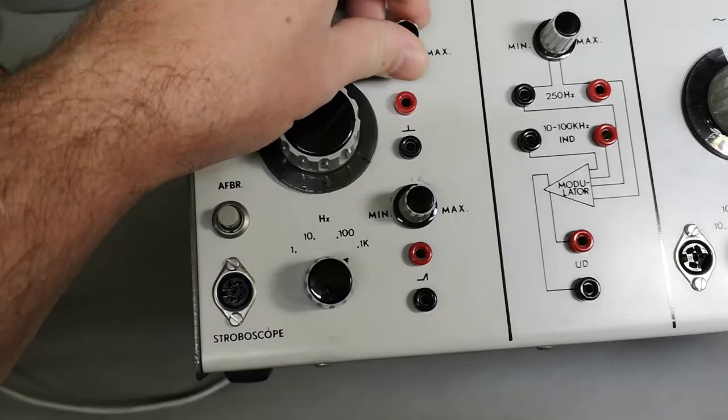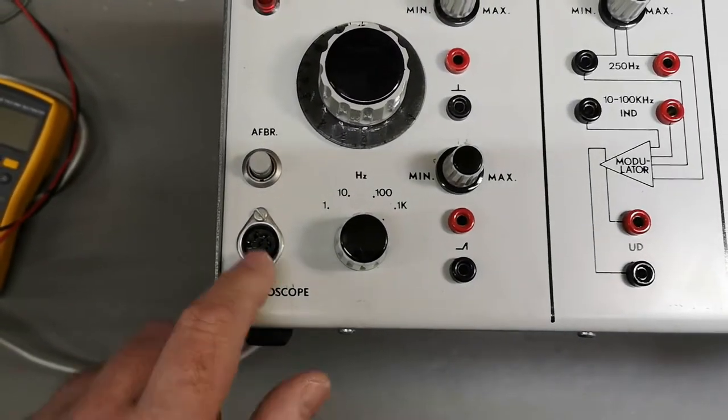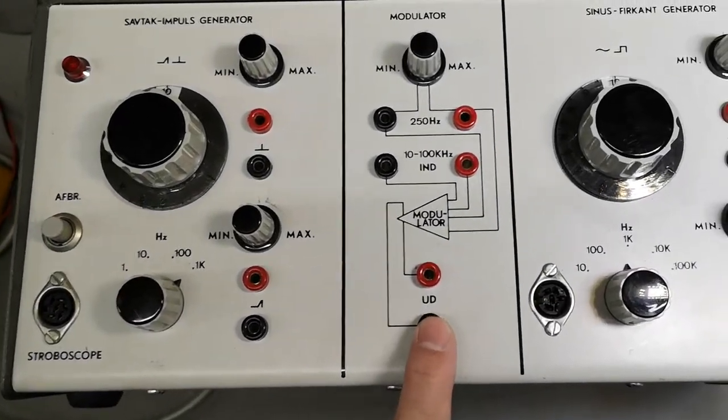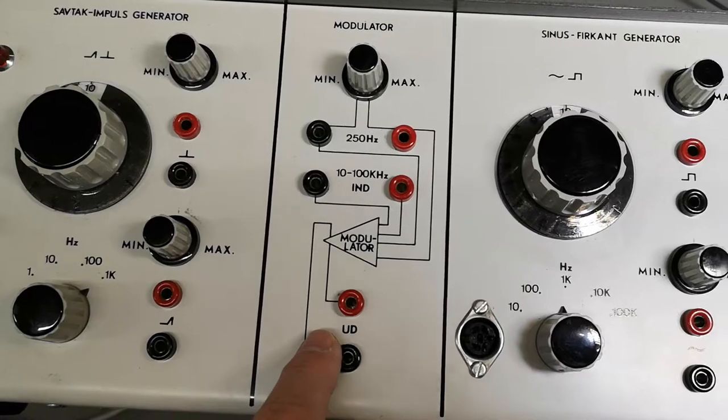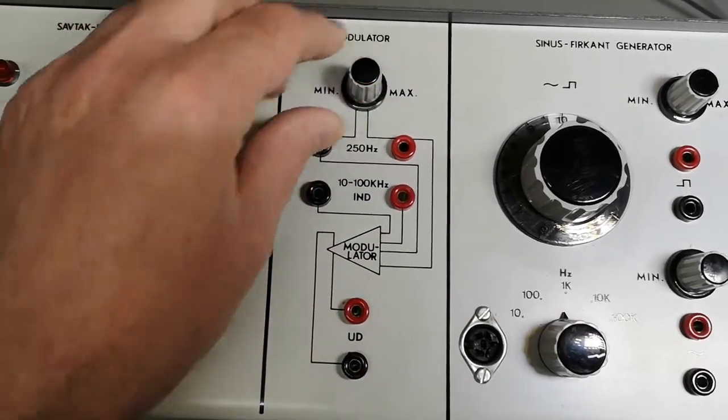There's a connector for strobe scope, and this is the mains. This one I find a little bit interesting, a modulator, so you can mix two different frequencies or something like that I guess. This is the level, and those are the inputs.